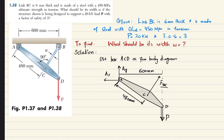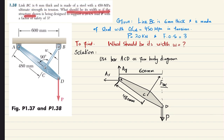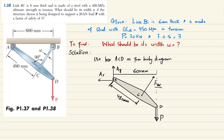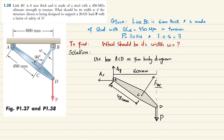Welcome back. Problem 1.38: link BC is 6 millimeter thick and is made of steel with 450 megapascal ultimate strength in tension. What should be its width w if the structure shown is being designed to support a 20 kilonewton load with a factor of safety of 3? You can see this is the structure where a load P is applied, and this is link BC used to support it — the width is w and thickness is t.